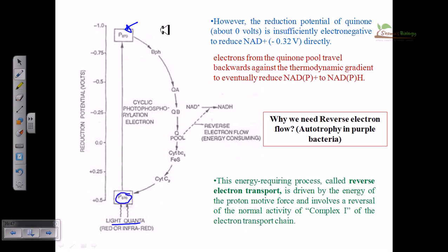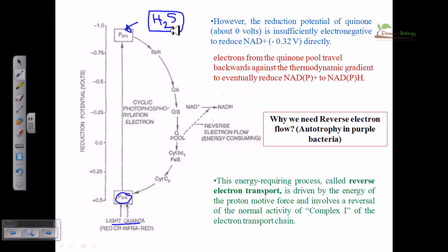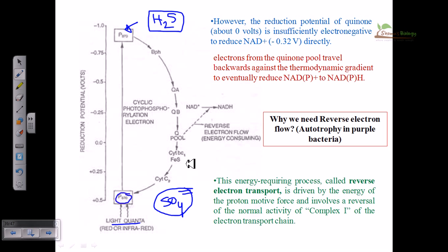For purple bacteria, H₂S is present acting as the electron donor for the reaction. It is at the upper level because it is the totally reduced form of sulphur, while at the bottom level we have SO₄²⁻, which is the totally oxidized — the highest oxidized — form of sulphur.